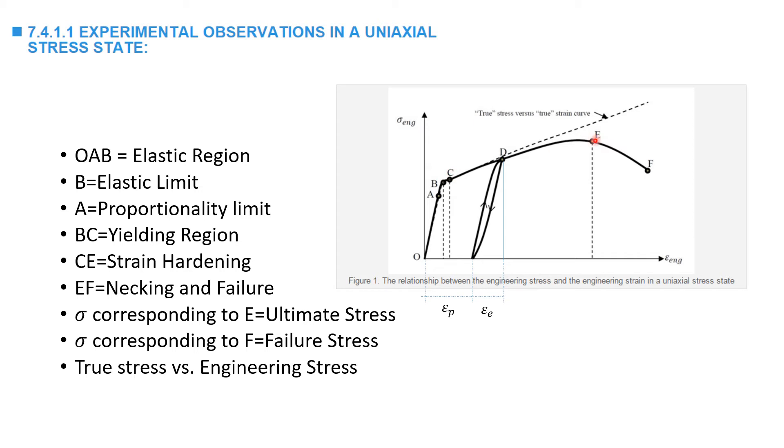The region between C and E is termed the strain hardening region. In this region, the curve exhibits an increase in the stress versus an increase in the strain. If the material is unloaded in this region, for example here at point D, the curve follows the initial elastic slope of the stress versus strain.